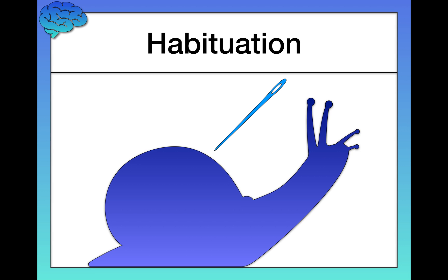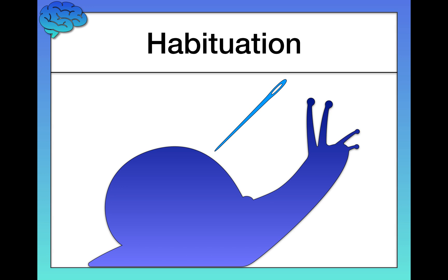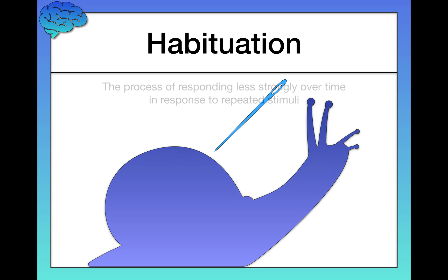So naturally the scientists poked it again, and they noticed that the aplysia responded a little bit less strongly. They poked it again, and it responded even less strongly, until eventually they did this enough times that they would poke the aplysia and it wouldn't respond at all — it wouldn't really move or react to the stimulus whatsoever. On the basis of these observations, they discovered the form of learning known as habituation.